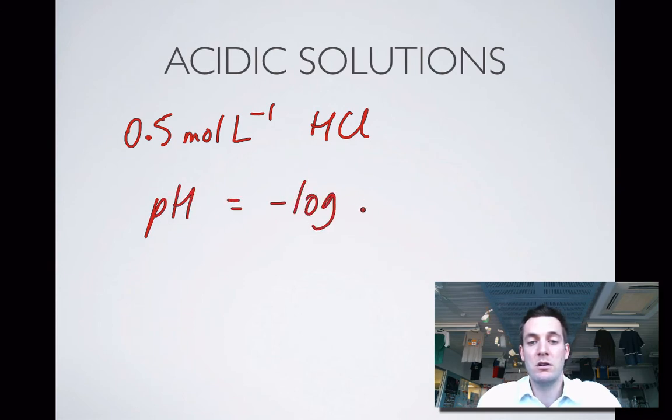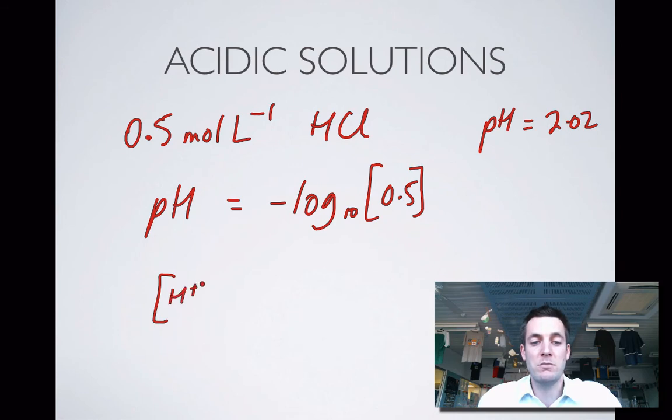Then I'd be able to find the pH because that equals minus log base 10 of 0.5. I should also be able to, if I'm told the pH is 2.02, find the concentration of H plus ions by going 10 to the minus 2.02. Do these things on your calculator.